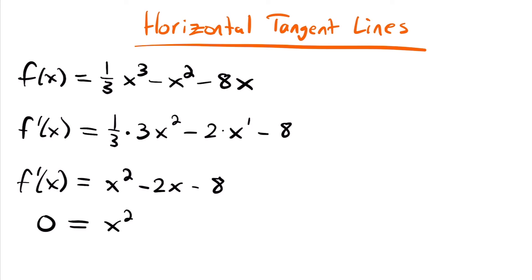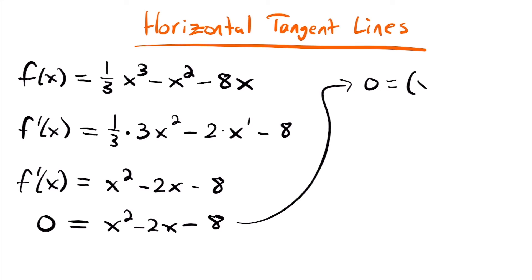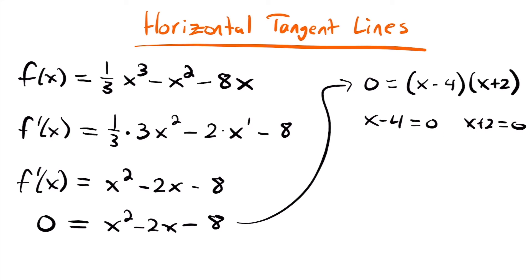Now we set the derivative equal to 0 and solve for x, because that finds all points where the slope is 0. So 0 equals x squared minus 2x minus 8. We factor by asking: what two numbers multiply to negative 8 and add to negative 2? That's negative 4 and 2. So 0 equals (x minus 4)(x plus 2). Setting each factor equal to 0 gives x minus 4 equals 0 and x plus 2 equals 0, so x equals 4 and x equals negative 2.